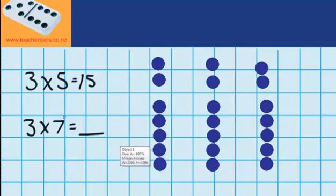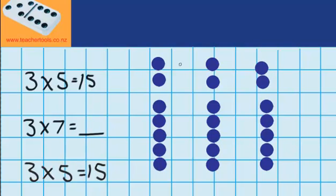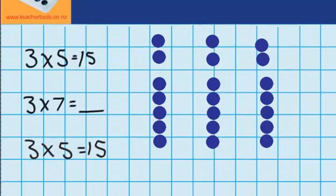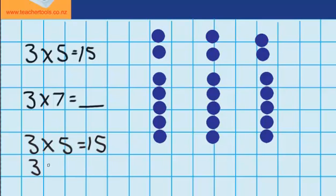So you can see that three times seven is the same as three groups of five, which I know equals fifteen. And another three groups - one group, two group, three groups - where I've got two in each group. Three times two equals six.